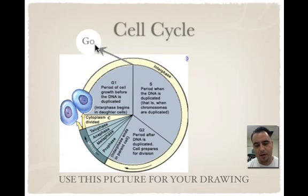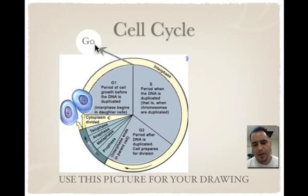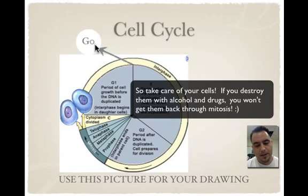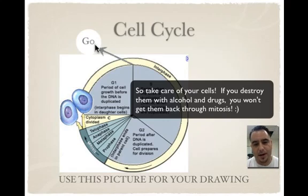G0, or G-zero, is when some cells are arrested — in other words, they're stopped — and they stay in this state called the G0 state, cells that won't continue to divide. These include things like nerve cells. At a certain age, the cells won't go through cell division anymore, so you'll have all the nerve cells you'll have at that certain point, because they don't continue in the cell cycle.